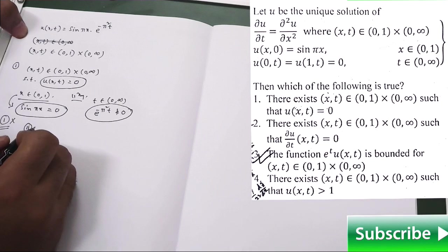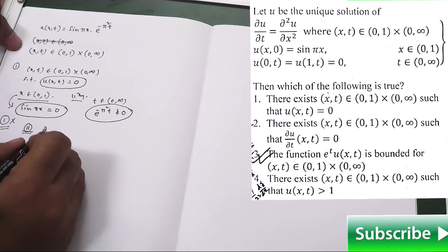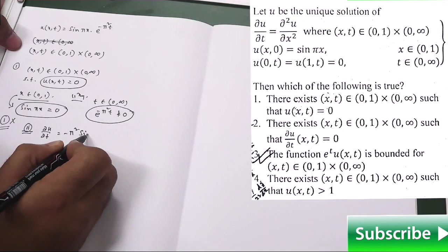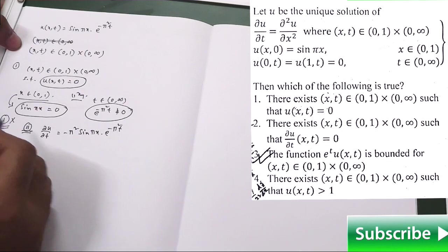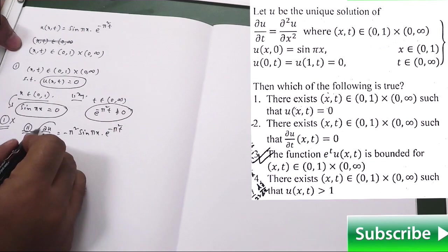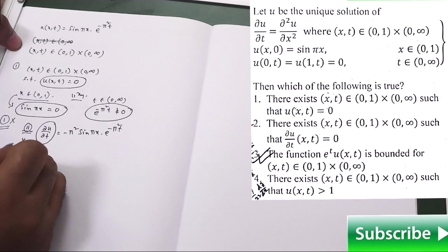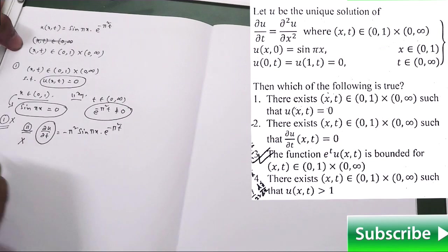Similar logic we can apply for the second option. Second option says that the same thing they have given that there exists (x,t) such that ∂u/∂t is equal to 0. That means for that purpose you just differentiate this one and you will have something like that π² t. And by the same logic you will say that there will be no such ordered pair for which ∂u/∂t is equal to 0. Thus second option is also false. Actually it is the same logic as we have applied for the first option.